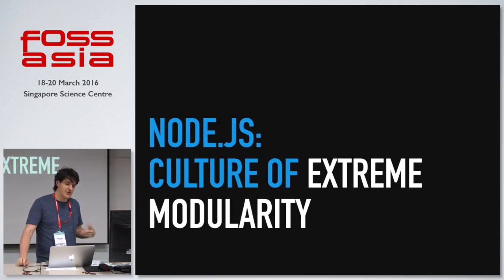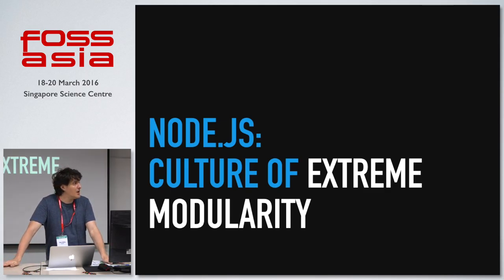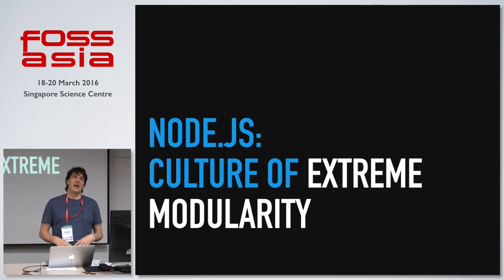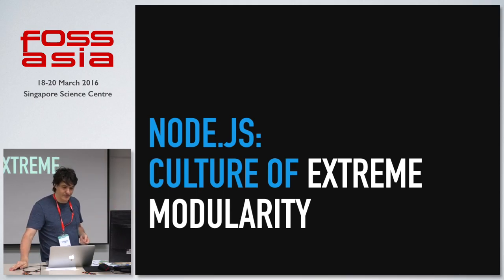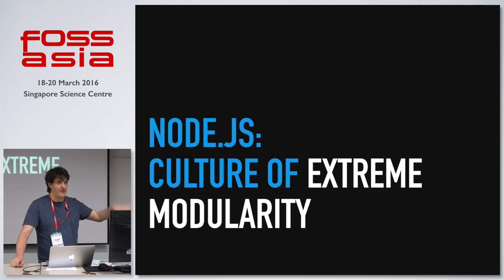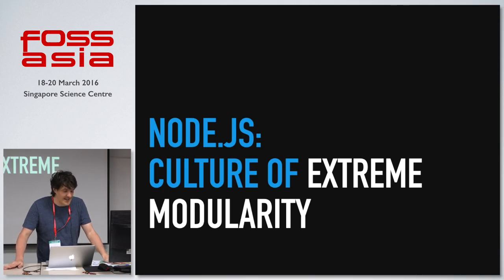Node has a culture of extreme modularity — everything's a module. 'There's a module for that' is a common phrase in the Node world. There are modules for everything — there's a module for reversing a list. I think there's even a module for no-op — literally a no-op. But that has actually been recently superseded by no-op2. When you build a Node application, you build it out of a hierarchy of lots of little pieces.